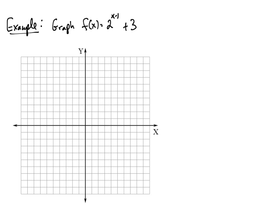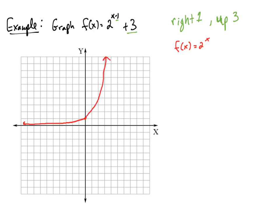Let's graph a function that has some transformations applied. The negative 1 is going to be a horizontal shift right 1 unit, and the plus 3 means we're going to move up 3 units. First I'm going to graph the parent function f of x equals 2 to the x. Since 2 is greater than 1, we're going to be increasing. The y-intercept is (0, 1). The domain is all real numbers, the range is from 0 to infinity, and the asymptote is y equals 0.